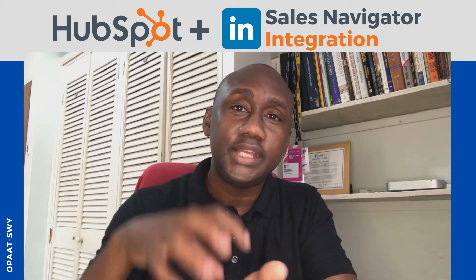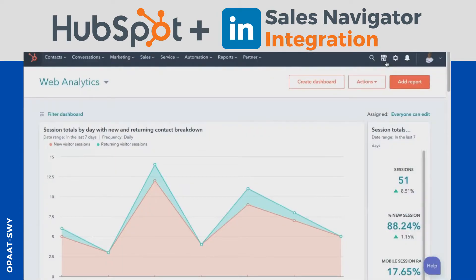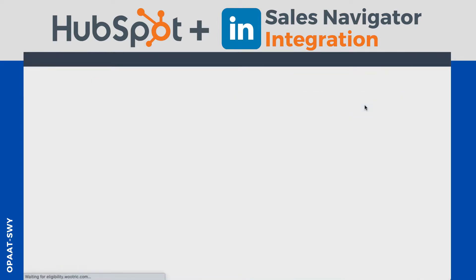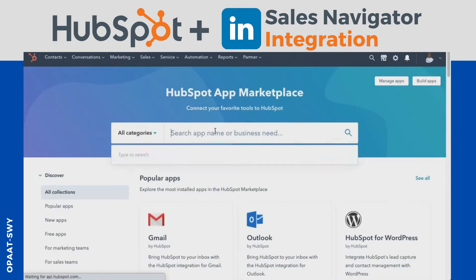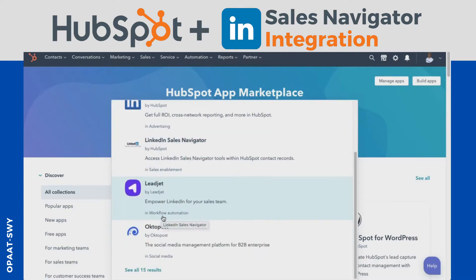So that all of your prospecting and all of your efforts now show up right within that CRM. Let's check it out. Go to your App Marketplace — once you go to your marketplace you'll see your app marketplace, so you click on Marketplace and then type in LinkedIn, and you'll see your options.